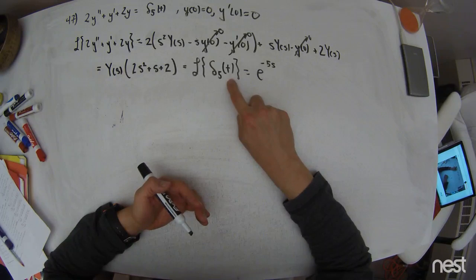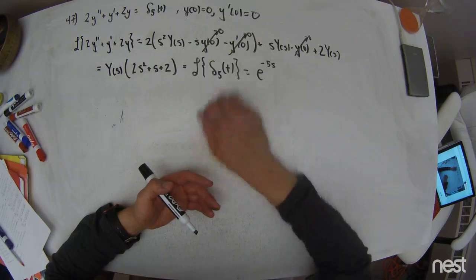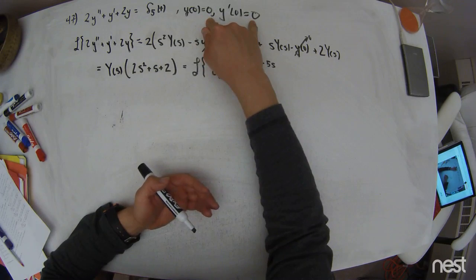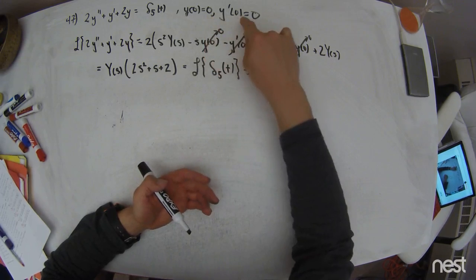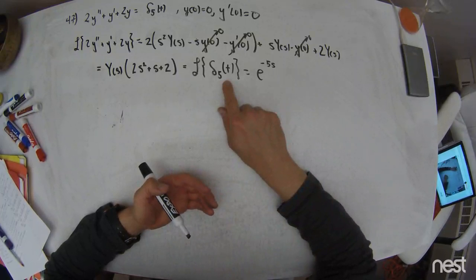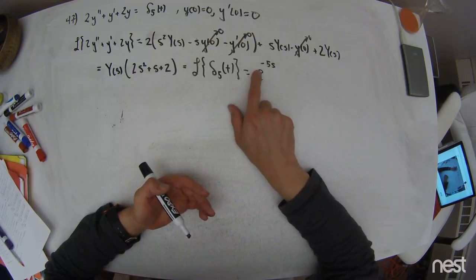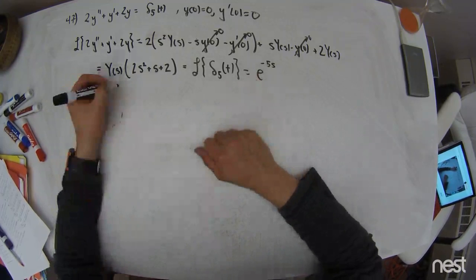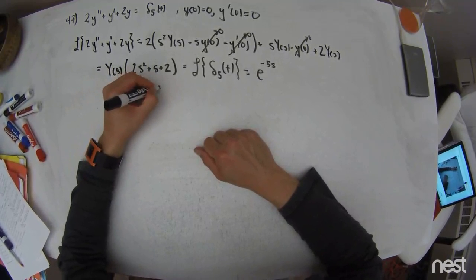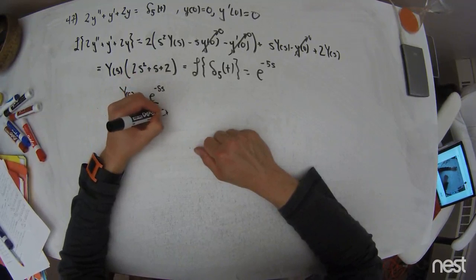Why should that happen? Well, this delta function is going to hit the system and give it the only energy that it has because it starts off with 0 initial displacement and initial velocity. And so this delta function is giving all that energy to it in that instance, and that's what this is about. So capital Y of s is equal to e to the negative 5s over 2s squared plus s plus 2.